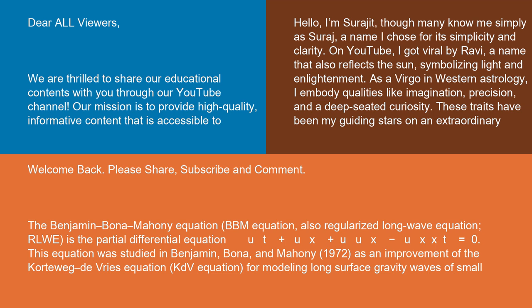This equation was studied in Benjamin, Bona, and Mahoney (1972) as an improvement of the Korteweg-de Vries equation, KdV equation, for modeling long surface gravity waves of small amplitude, propagating unidirectionally in 1+1 dimensions.